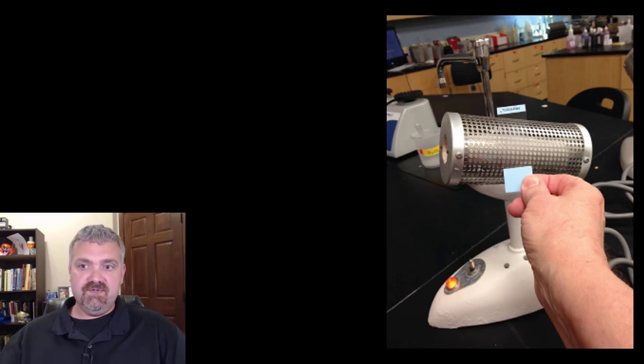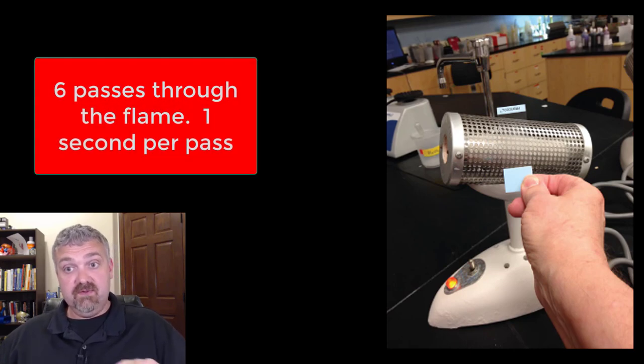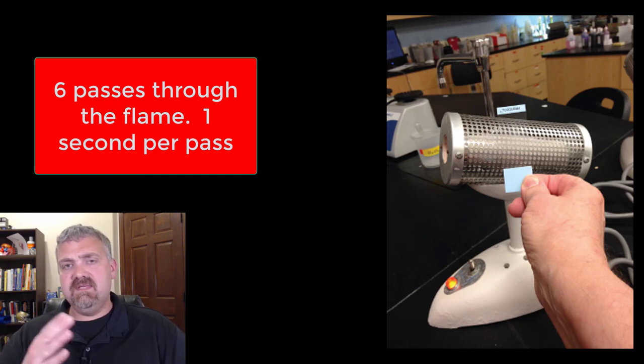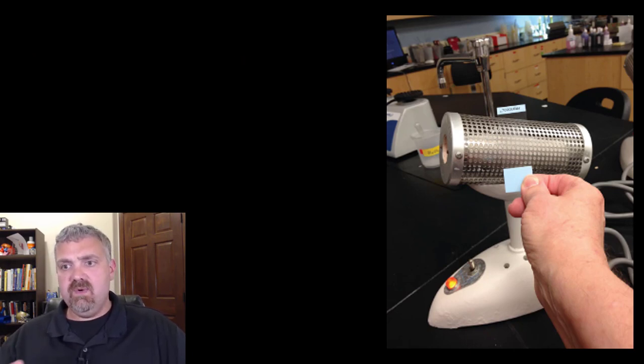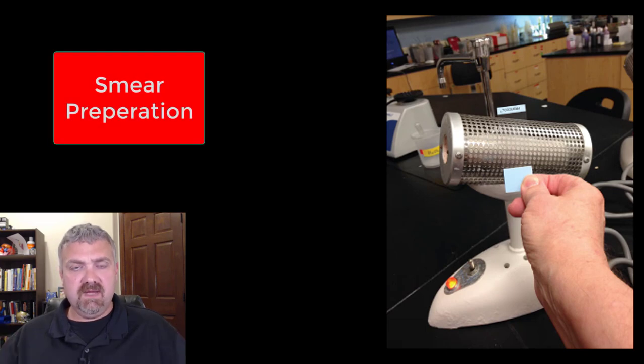I don't generally have students do that. I'll have you take a clothespin and just pass the smear through the flame of the Bunsen burner six times. Six one-second passes is generally about perfect. We've transferred our organisms, let them air dry, and heat fixed them. Now you're ready to stain them.